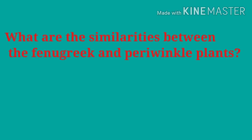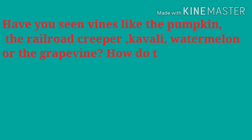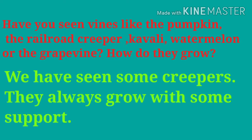What are the similarities between the fenugreek and periwinkle plants? Fenugreek and periwinkle are small herbs. Have you seen vines like pumpkin, railroad creeper, cowpea, watermelon, or the grapevine? Some creepers always grow with some support.